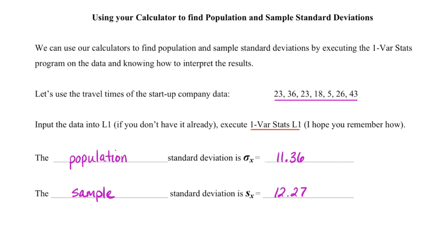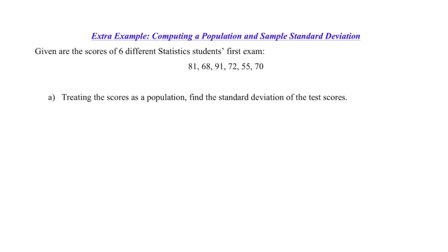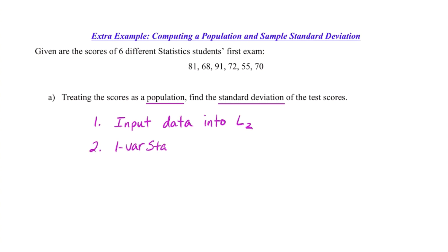Let's go ahead and apply that to the next example to create a bit of a comparison. We have scores of six different stat students and how they did on their first exam. They tell us to treat the scores as a population and find the standard deviation, which means we're trying to find sigma. We'll take the calculator approach. Step one: input our data into our calculators — I'm going to throw this data into L2, just so we can leave the other data in L1. Then we'll run our one-var stats program of L2, and we should get our answer of sigma, which was approximately 11.16.